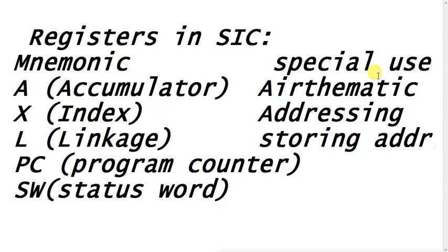Now we will see the usage and special purpose of these registers in the SIC computer. The accumulator register, A, performs specific arithmetic operations. The index register, X, helps in addressing. The linkage register, L, stores addresses — generally it stores return addresses. For example, when we execute subroutines like JSUB, the return address is saved in the linkage register.